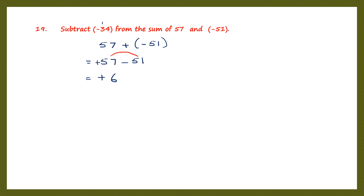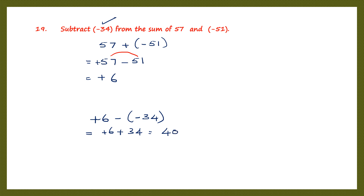Now the second part: subtract minus 34 from plus 6, meaning plus 6 must come first. So plus 6 minus minus 34. Opening the brackets — minus before a bracket, change the sign of the other integer — it becomes plus 34. So plus 6 plus 34: 6 plus 34 is 40. Our final answer is 40.